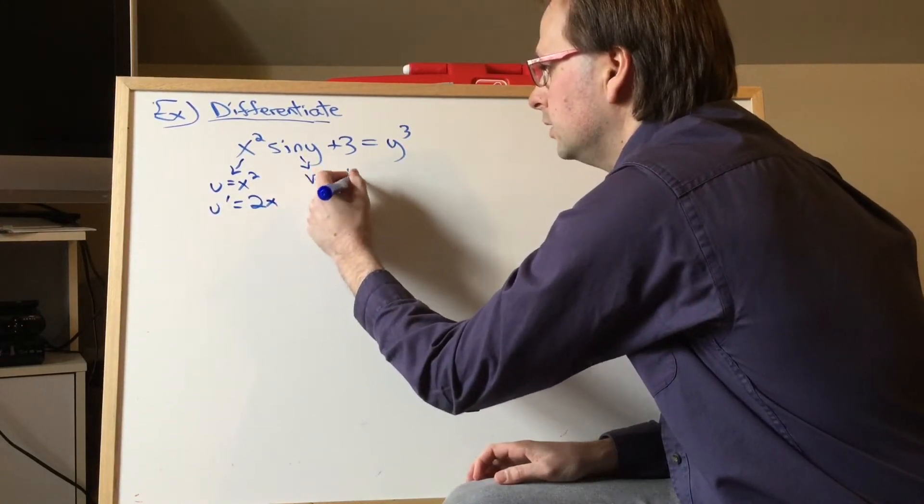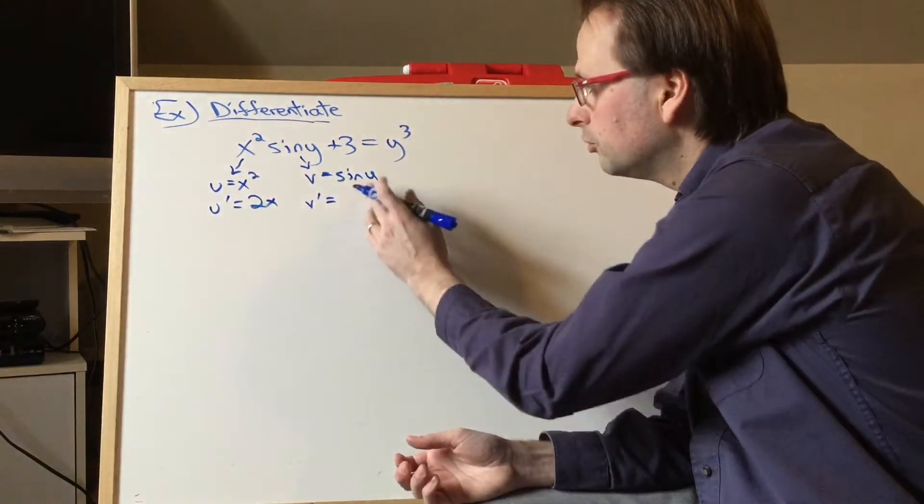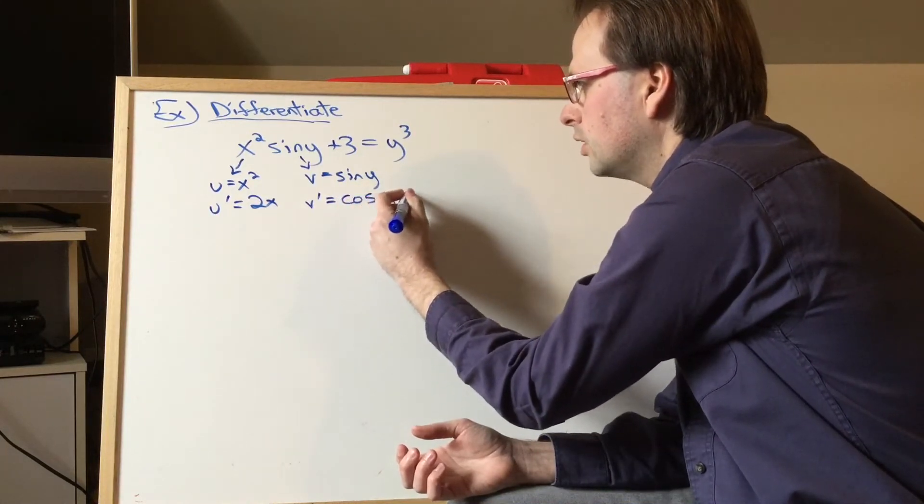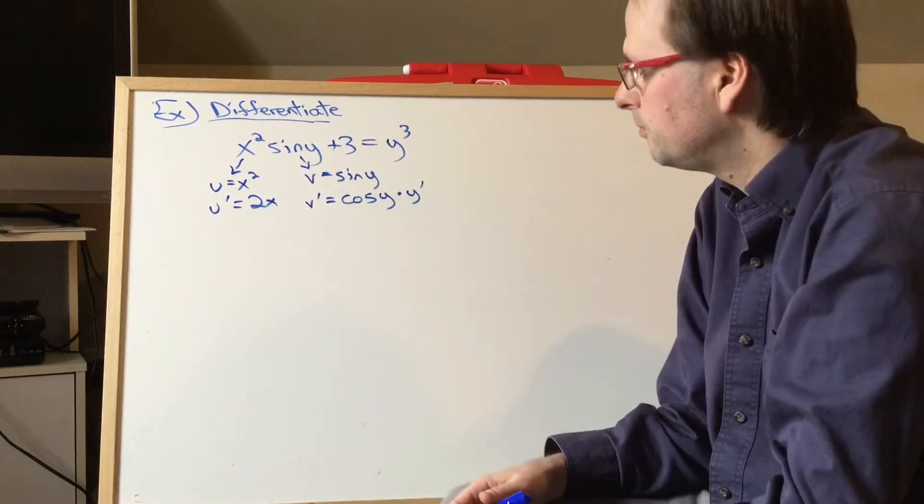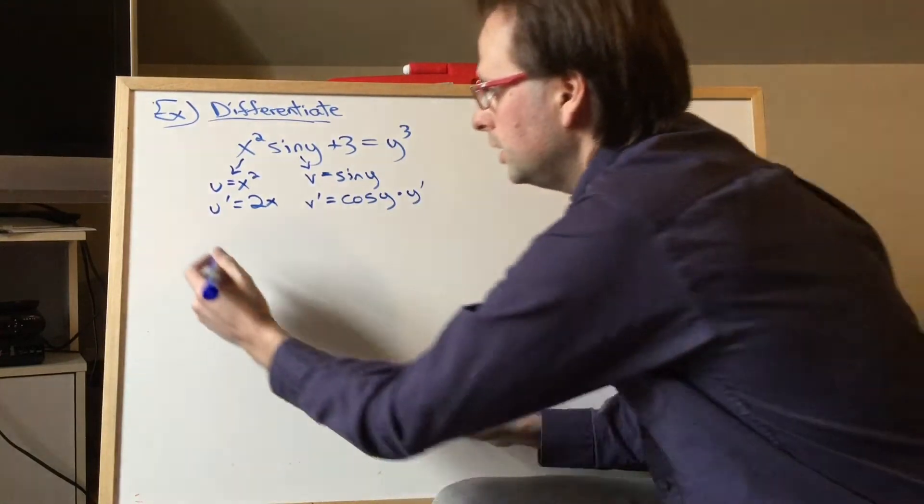v is sine of y, and when we do our y stuff, we differentiate regularly. Sine y would turn into cos y, and we tack a y prime onto the end. That's all the setup done. So let's go ahead and differentiate.